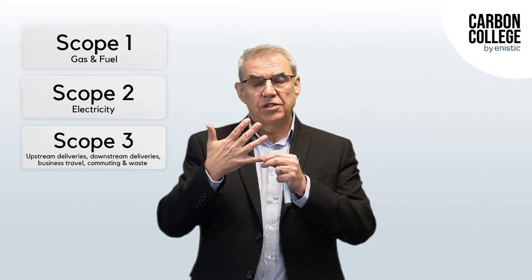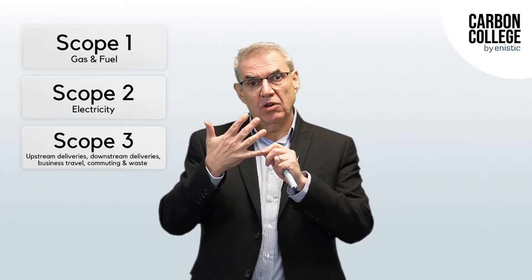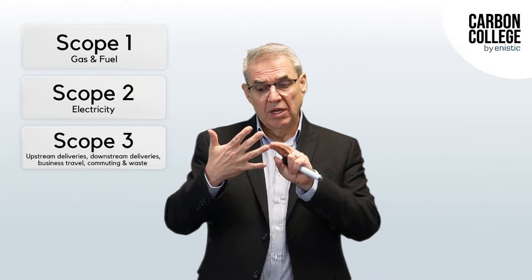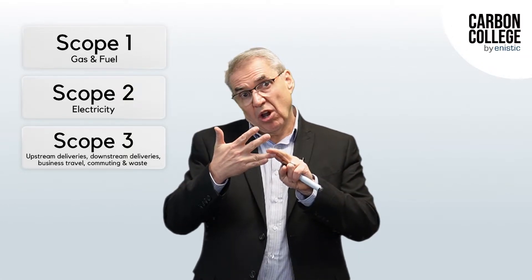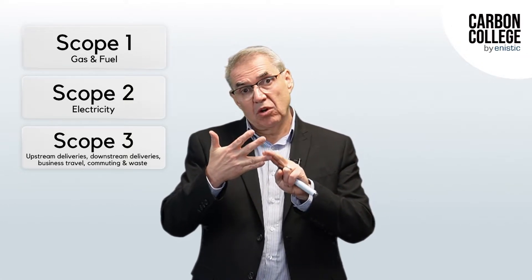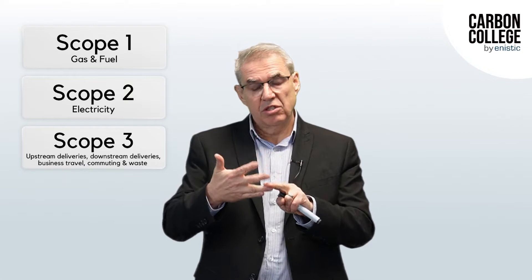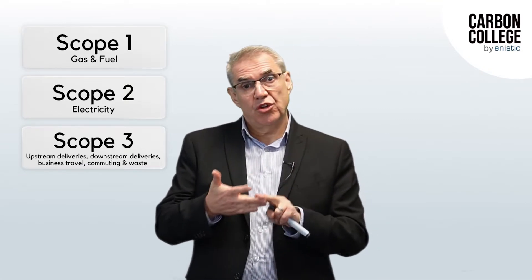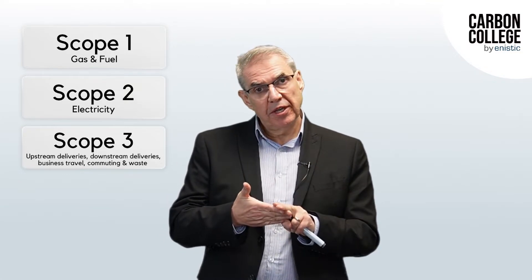And then five scope threes. You've got upstream deliveries — you need to quantify the carbon content of the deliveries made to you. Downstream deliveries, i.e. the carbon content of the deliveries you make out to clients. Business travel: air, train, bus, et cetera.